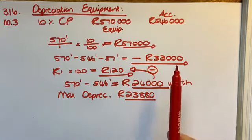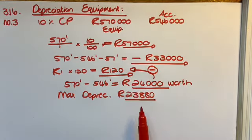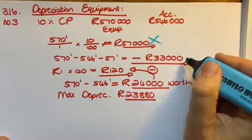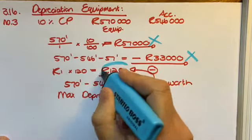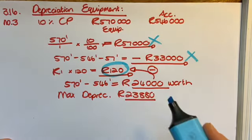So what am I going to do with these amounts in my financial statements? Let's just see where they're all going to go. This 120, that's going to be how much my equipment is worth at the end. And then this 23,880 will be my depreciation.